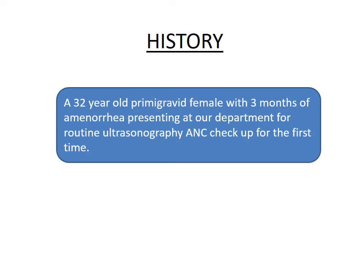History: A 32-year-old primigravida female with 3 months of amenorrhea presenting to our department for routine ultrasonography ANC checkup for the first time.